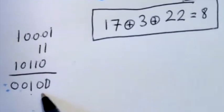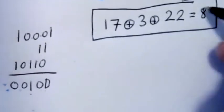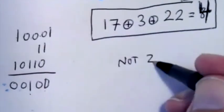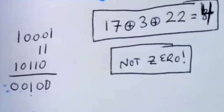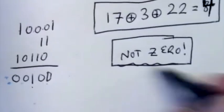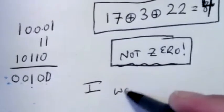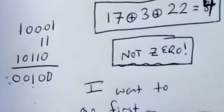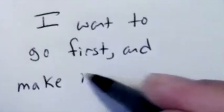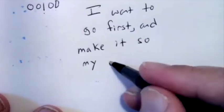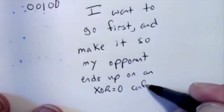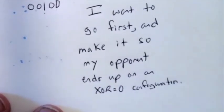If I look at that and say, okay, this is not 0. So I want to go first because it's not, because the XOR is not 0, I want to go first because I know that there's a way to win from here. And then what I want to do when I go first is I want to make it so that my opponent ends up on a losing position, which means they're going to end up with something where they are on XOR 0.